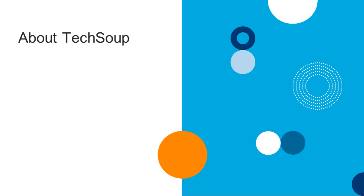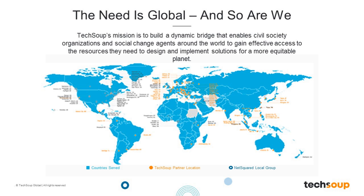Before we get started, I'll talk about TechSoup in case you are new to us. We are everywhere in the world that is blue on this map, which is a lot of places. If you're looking to access technology donations, resources, connect with other social change agents around the world, or meet with technologists in different communities, look at this map — if you see your country on it, we are there.